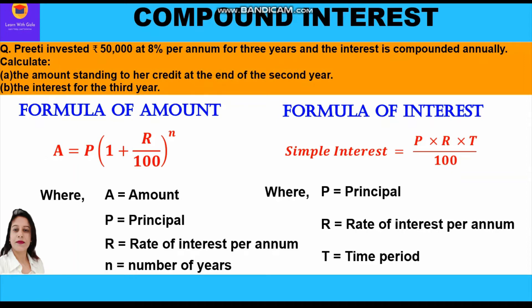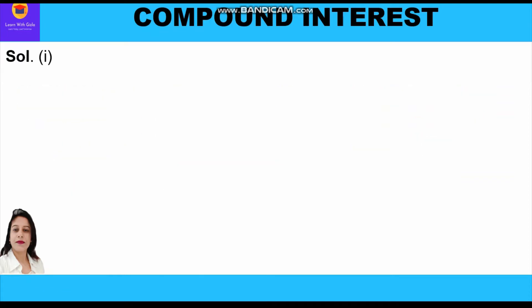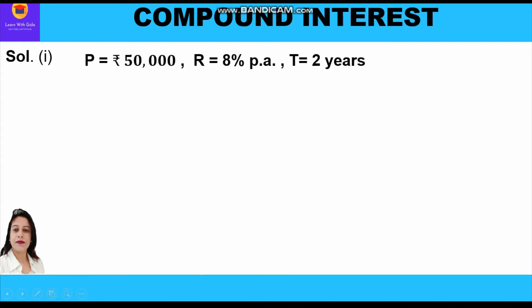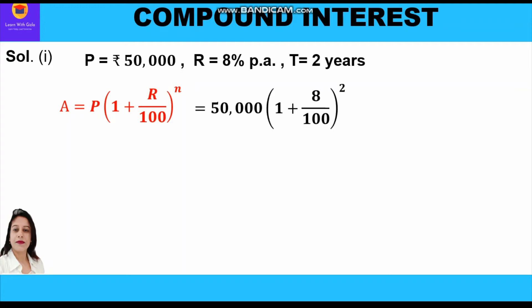These two formulas — the amount formula and the interest formula — we are going to use to solve this question. Let's start with the solution. Principal is rupees 50,000, rate of interest is 8% per annum, and since we have to find the amount at the end of the second year, we take the time period as two years. The amount formula is A = P(1 + r/100)^n.